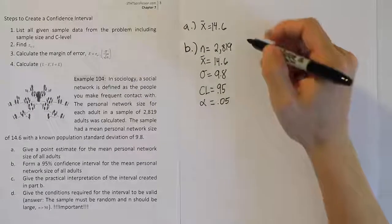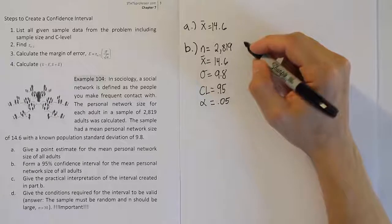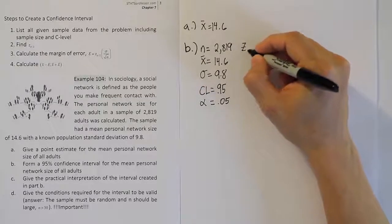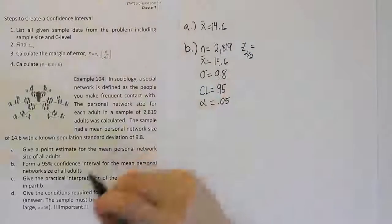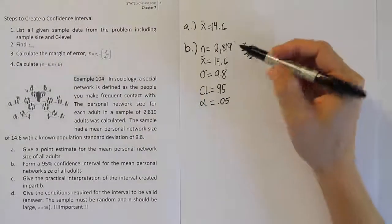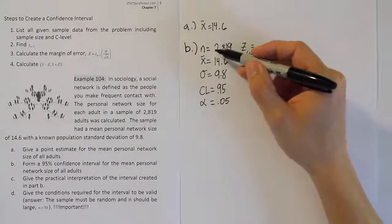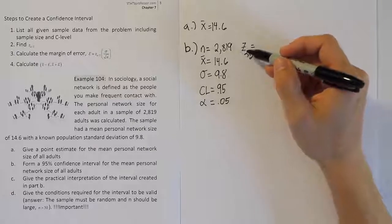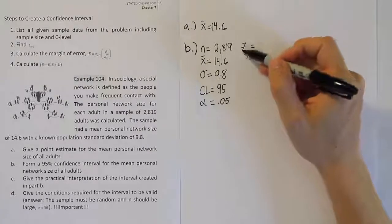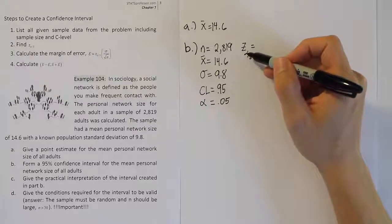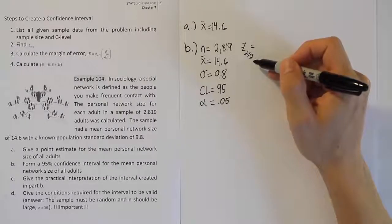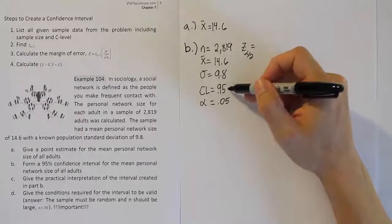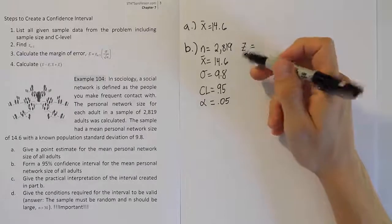The second part of this confidence level procedure is to figure out what your Z α/2 value is. We're using Z α/2 here because we're using a large sample size, 2,819. Because of that, we're okay with using Z. We're going to look at the table now to determine what the Z α/2 value would be when our confidence level is 95% and our sample size is very large.